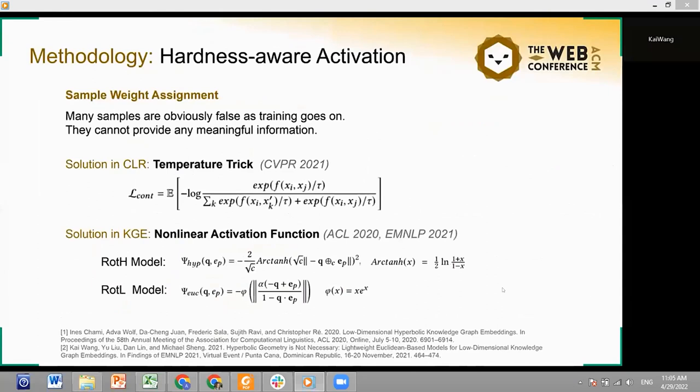The second part of this paper is the hardness-aware activation for sample weight assignment. During the training process, many negative samples can already be easily distinguished, which cannot provide effective training gradients. Therefore, assigning different weights to samples will improve the training efficiency.